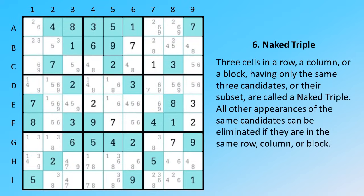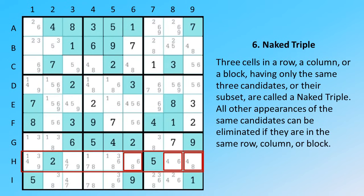Three cells in a row, a column, or a block, having only the same three candidates or their subset, are called a naked triple. All other appearances of the same candidates can be eliminated if they are in the same row, column, or block.